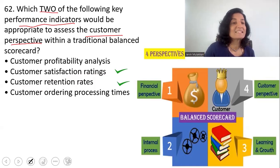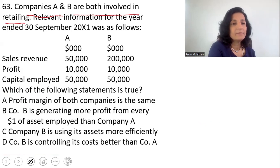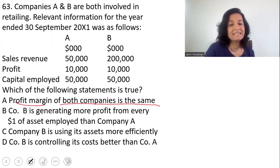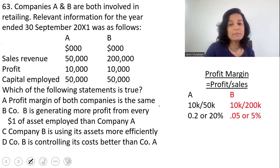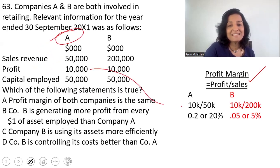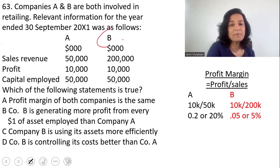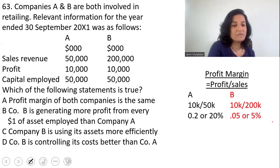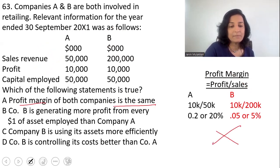Question 63: companies A and B are both involved in retailing. You're given sales revenue, profit, and capital employed for the year ended 30th September. Statement one: profit margins of both companies are the same. Profit margin = profit ÷ sales. Company A: profit is $10,000, sales is $50,000, so profit margin is 20%. Company B: profit is $10,000, sales is $200,000, so profit margin is 5%. They are not the same, so option A is false.